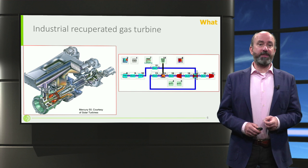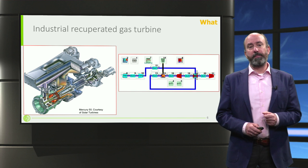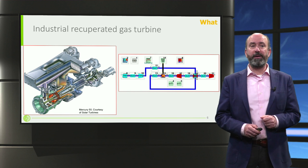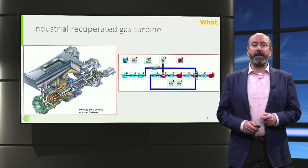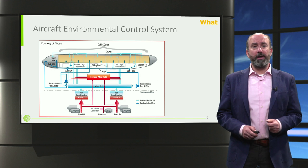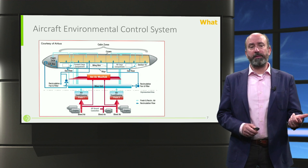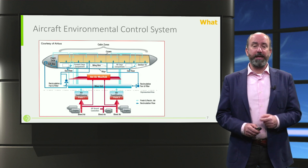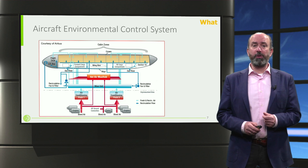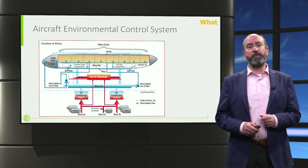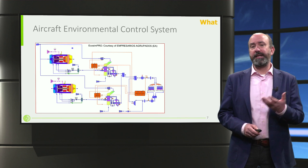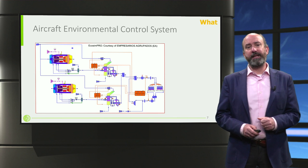Another example is a terrestrial gas turbine, which achieves incredibly high efficiency thanks to that bulky element on top called the recuperator. Again on the right-hand side, you see its representation in GSP. You can also end up modelling systems that do not provide propulsion or power, but are thermal conversion systems — such as the environmental control system for aircraft, which is a very heavy energy consumer on board, and there is a lot of interest in making it efficient.